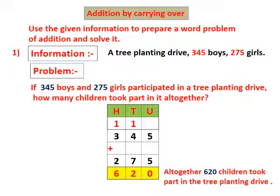Now we add the hundreds. In the hundreds place, 3 hundreds plus 2 hundreds plus 1 hundred carried over is equal to 600. The addition of this number is 620. Altogether, 620 children took part in the tree planting drive.